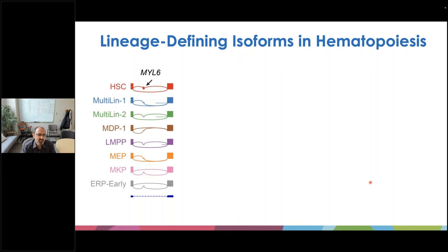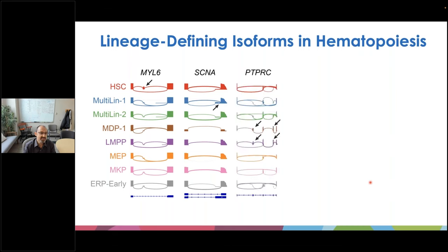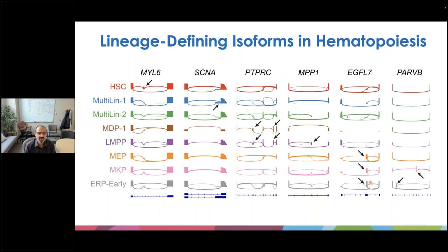Examples of what you can find: looking at specific cell lineages with unique splice isoforms, we find exons unique to one particular cell state. In MYL6, an exon is maximally expressed only in hematopoietic stem cells. An alternative 3-prime splice site in SCNA is uniquely detected in multi-Lin progenitor populations. We can identify CD45/PTPRC gene isoforms uniquely expressed in MDP and LMPP, matching what's shown in the literature, and various alternative promoters uniquely expressed in different cell lineages — potentially improved markers over traditional gene expression-based markers.